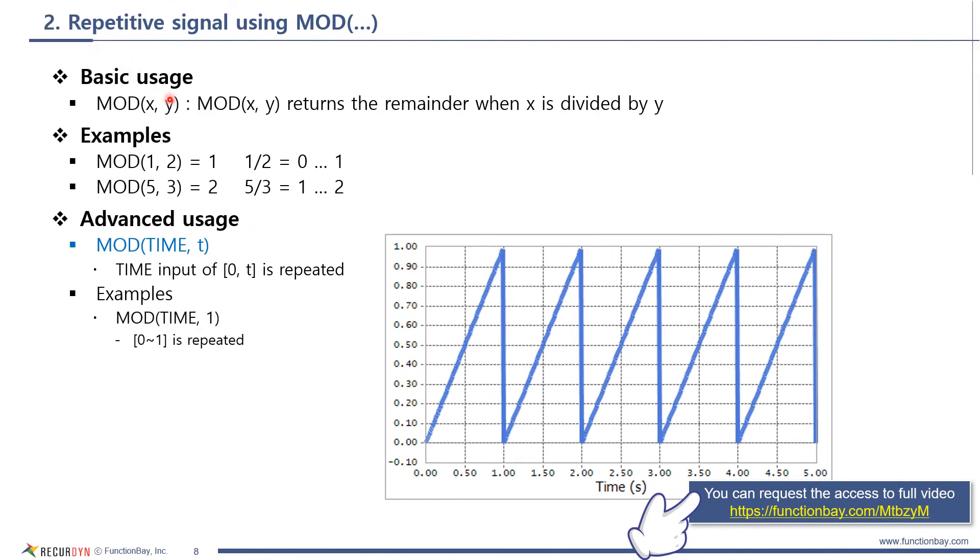In this example, I will introduce how to create a repetitive signal using MOD function. MOD returns the remainder of dividing x by y. For MOD with the parameters 1 and 2, it is 1 divided by 2. And it returns its remainder 1. For MOD, 5 and 3, it returns 2, which is a remainder of 5 divided by 3.